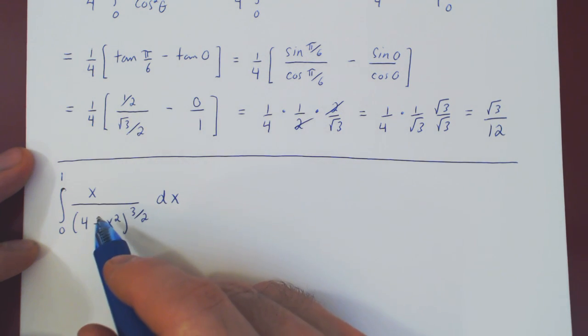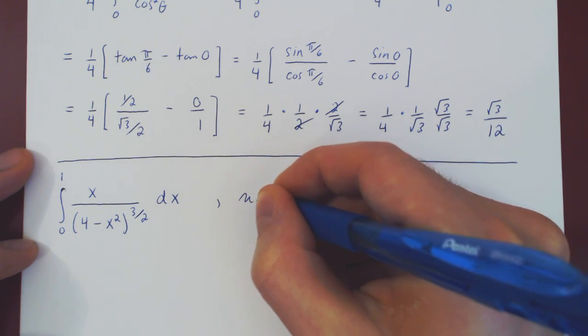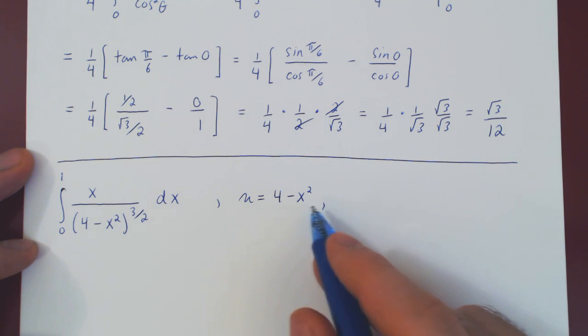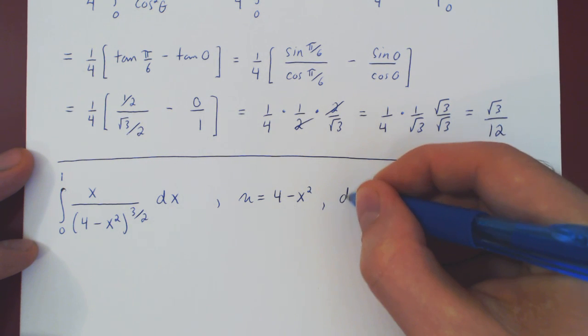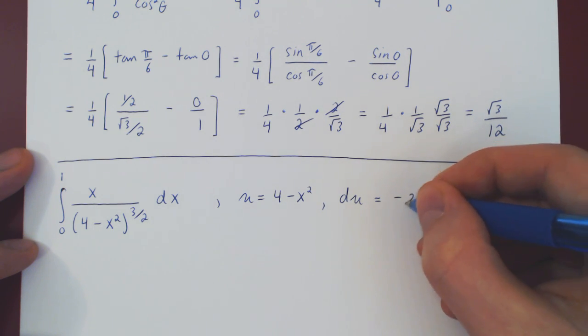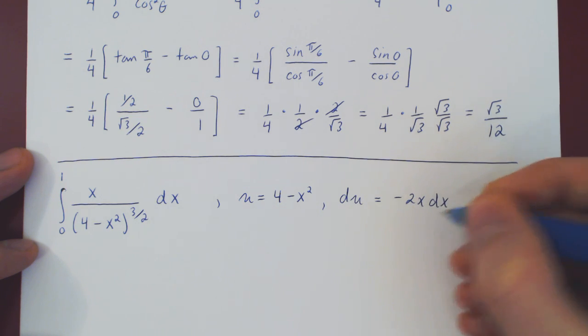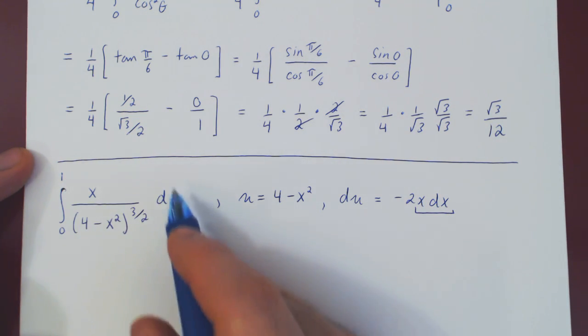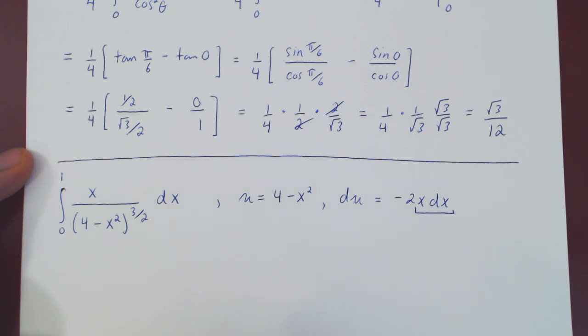In this case, you can see that if you differentiate 4 minus X squared, you get negative 2X, which is your numerator, X. So here, if you let U be 4 minus X squared, take the differential on both sides, so dU will be the differential of 4 minus X squared, which will be negative 2X dx. You can, of course, then solve for your X dx, and you'll have a very simple integral coming from a simple U substitution.